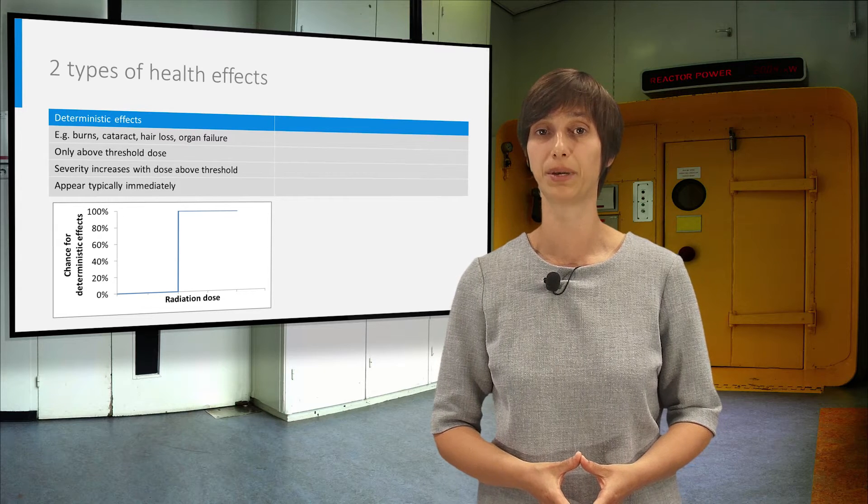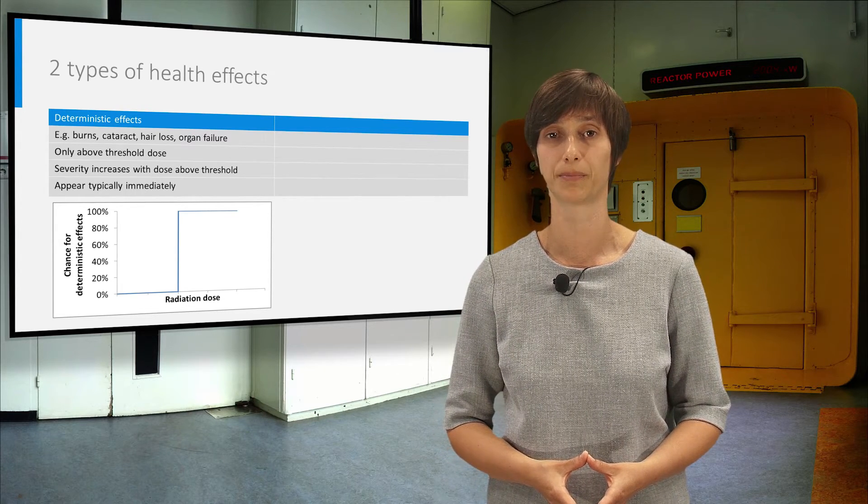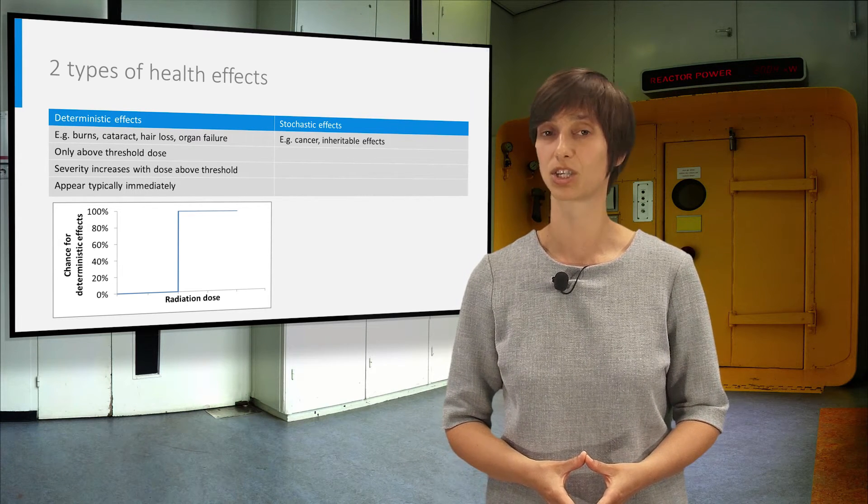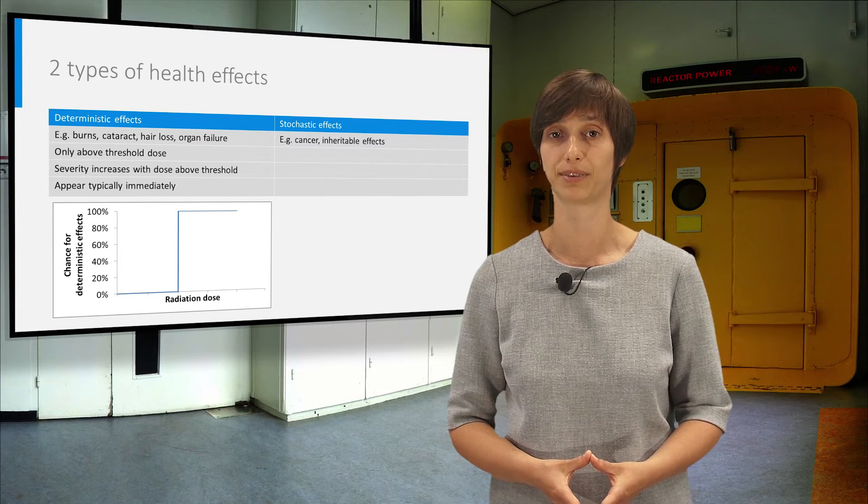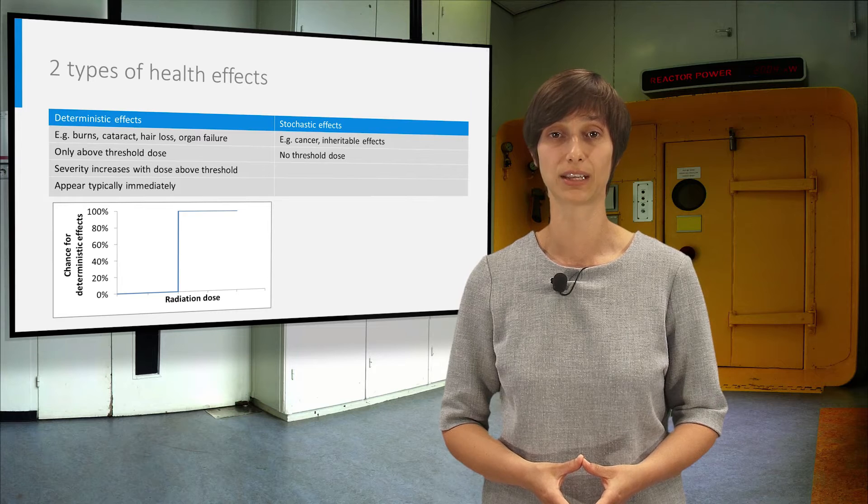Deterministic effects typically appear immediately. Only cataract needs some decades to develop. Besides the deterministic effects, we also have the stochastic effects, such as cancer and inheritable effects. These have no threshold dose and can occur even at very low doses.